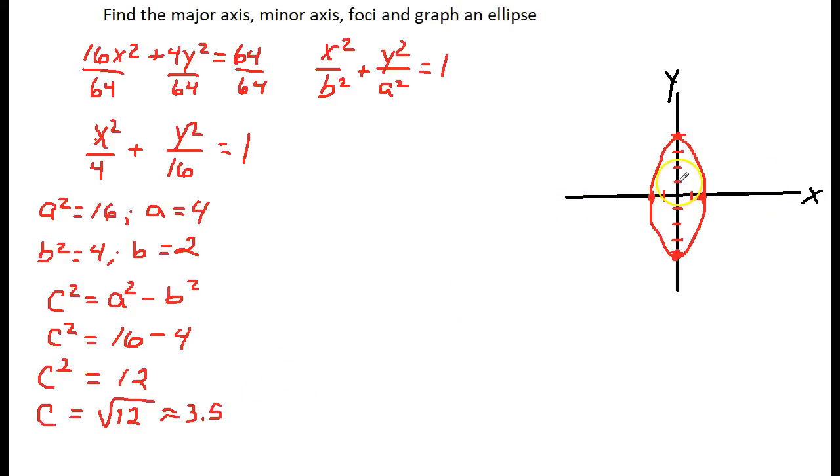So what does that mean? I go up here and count 1, 2, 3.5 units. Right there will be one, and 1, 2, 3.5 units down. There will be my other focal point.